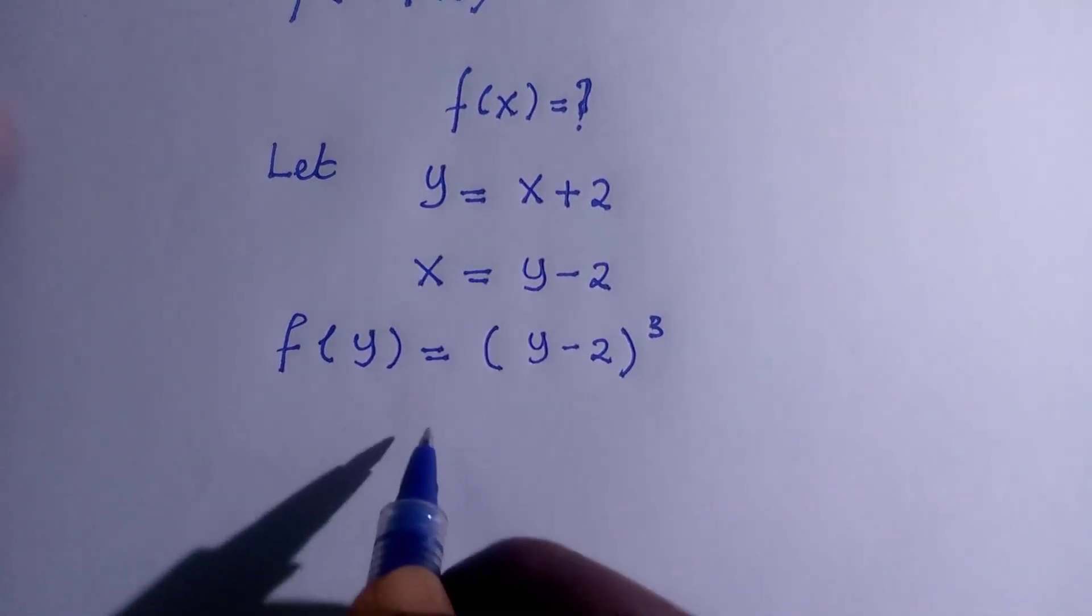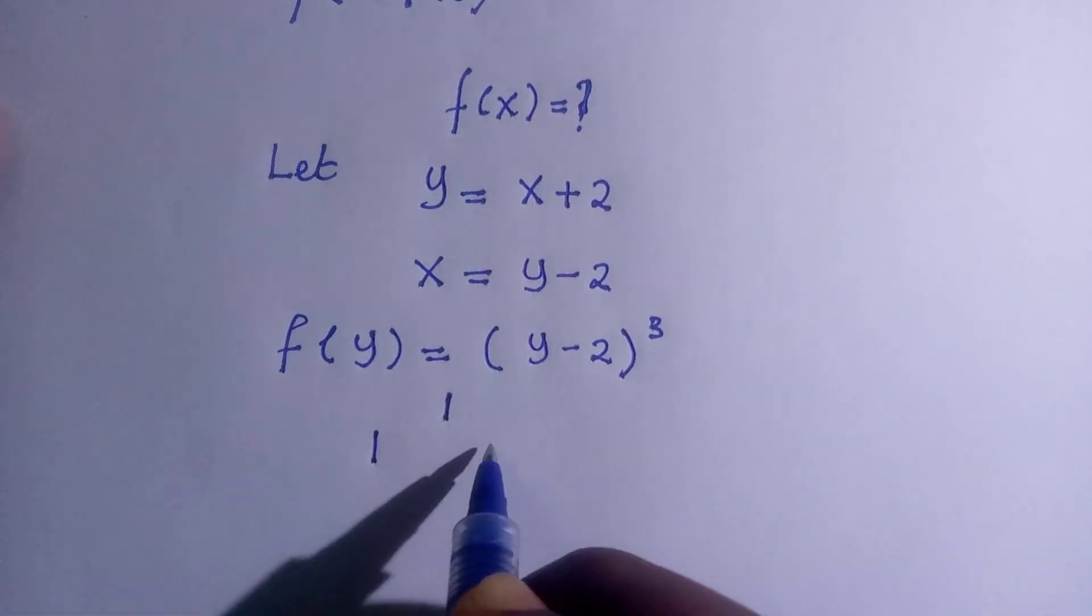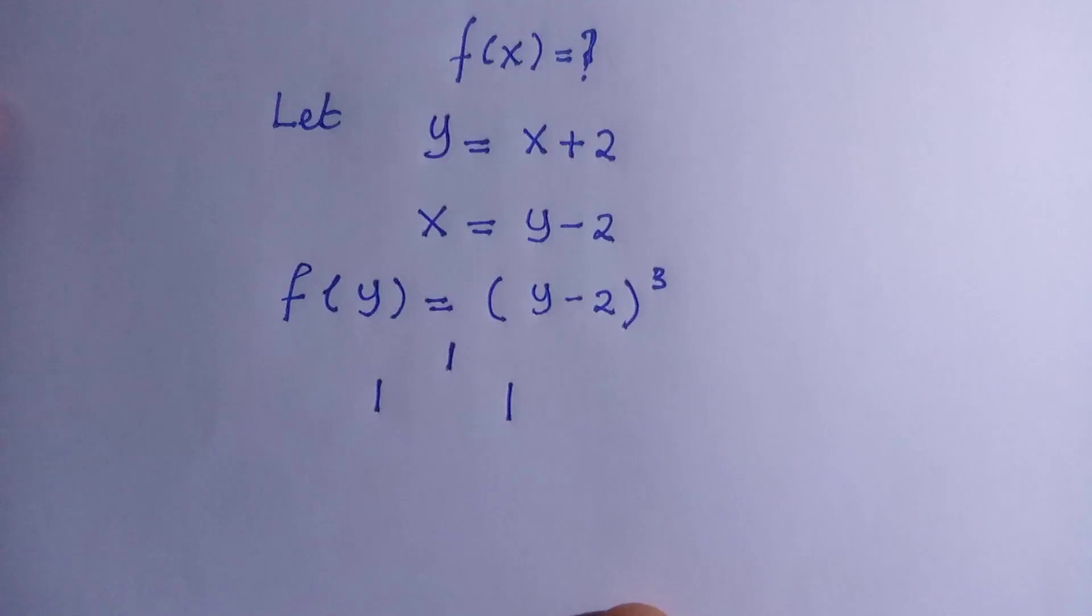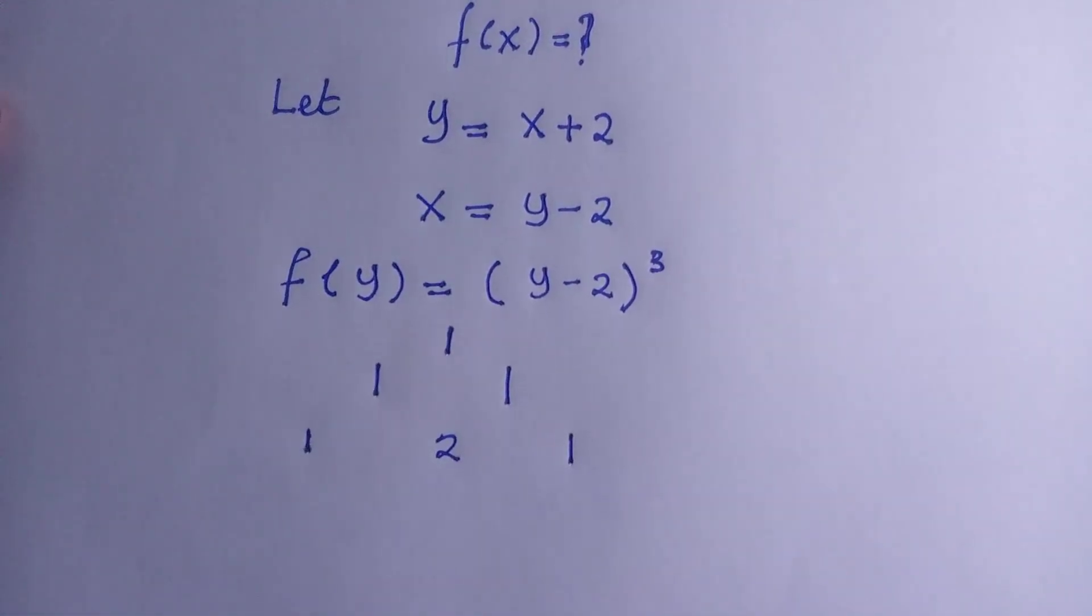So we know that we have 1, 1, and 1. So again, we have 1, 2, and 1. So finally, we have 1, 3, 3, and 1.